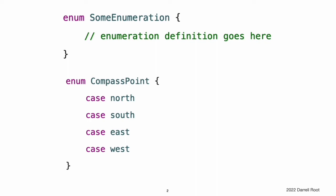Enumerations in Swift are first-class types in their own right. They adopt many features traditionally supported only by classes, such as computed properties to provide additional information about the enumeration's current value, and instance methods to provide functionality related to the values the enumeration represents. Enumerations can also define initializers to provide an initial case value, can be extended to expand their functionality beyond their original implementation, and can conform to protocols to provide standard functionality.